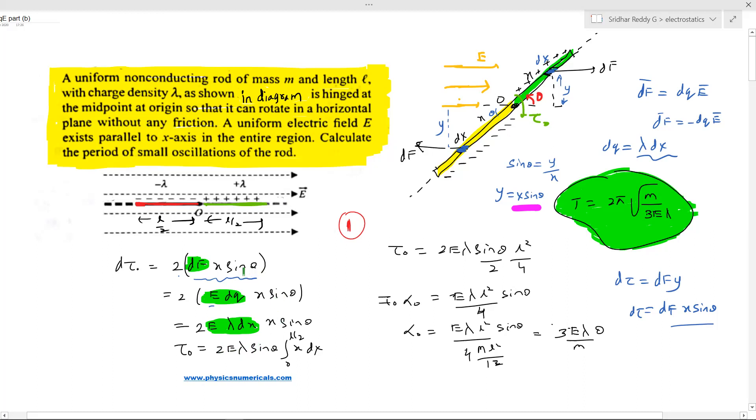Try to follow the sequence here. Then 2e λ - why sin θ? Sin θ has come from here because of this one. So 2e λ dx × x sin θ, or 2e λ sin θ × x dx. What is the length of the rod? What should the limit be? It should be from 0 to l/2.